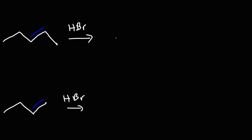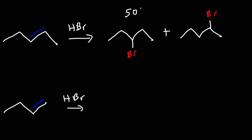For the first reaction above, we get a mixture of two different products. We're going to get 3-bromopentane and 2-bromopentane, and this is going to be 50-50. But for the reaction below, we're going to get a major product, which is 2-bromobutane. We could get 1-bromobutane, but that's going to be a minor product.